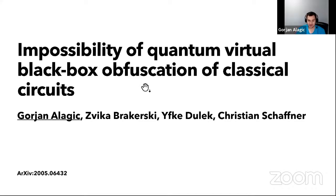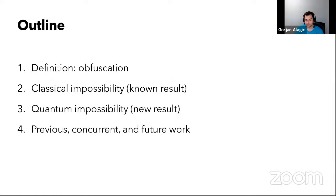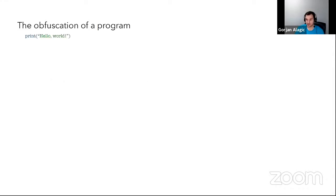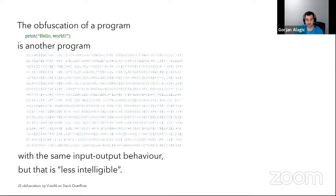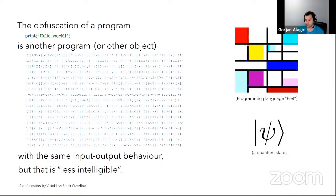This is joint work with Zika, Ifka, and Chris. We showed that it's not possible to use quantum mechanics to obfuscate classical programs in this black box manner. I'll be using Ifka's very nice slides. So first, what's obfuscation? It's just some method for turning a useful program into a functionally equally useful program, which is somehow unreadable in terms of code.